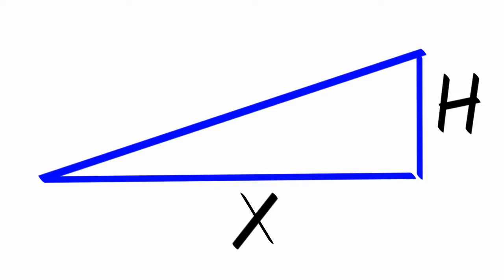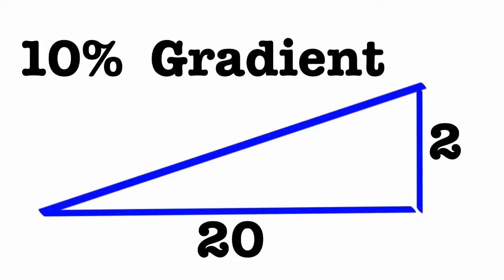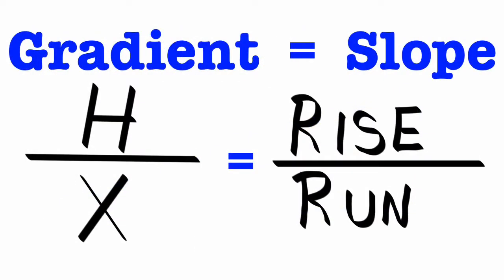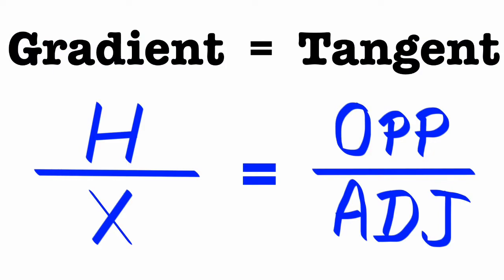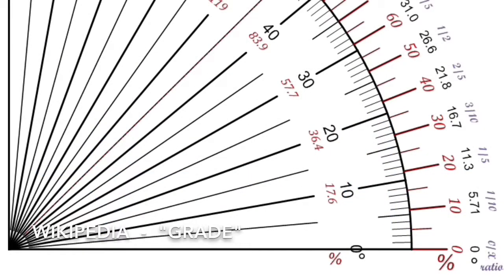So you take h over x, and here's a real example: 2 over 20 gives you one-tenth, or a 10% gradient. The gradient is also equal to the slope, the rise over the run, and the gradient is exactly the same decimal value as the tangent of the angle with respect to the horizontal.